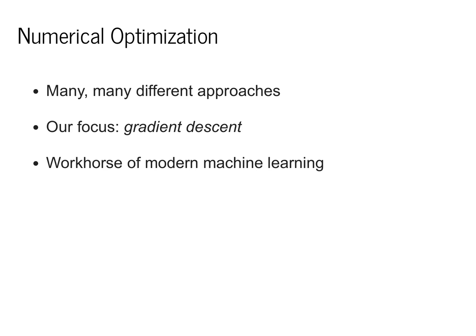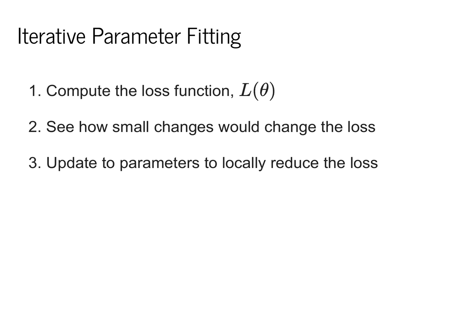One caveat I want to make at this point is that we'll be primarily focusing on one type of model fitting, which goes by the name gradient descent. There are many different approaches to numerical optimization. However, we're particularly interested in deep learning, and in deep learning, gradient descent has become the main standard approach that people will utilize. If you're interested in other forms of optimization, it's a very interesting area, but it's outside the scope of these lectures. In this class, we'll be following the following three-step formula for fitting the parameters of a model. In step one, we'll compute the loss function L theta. We'll then see how small changes to the parameters would change the loss. Finally, we'll update the parameters to locally reduce the loss.